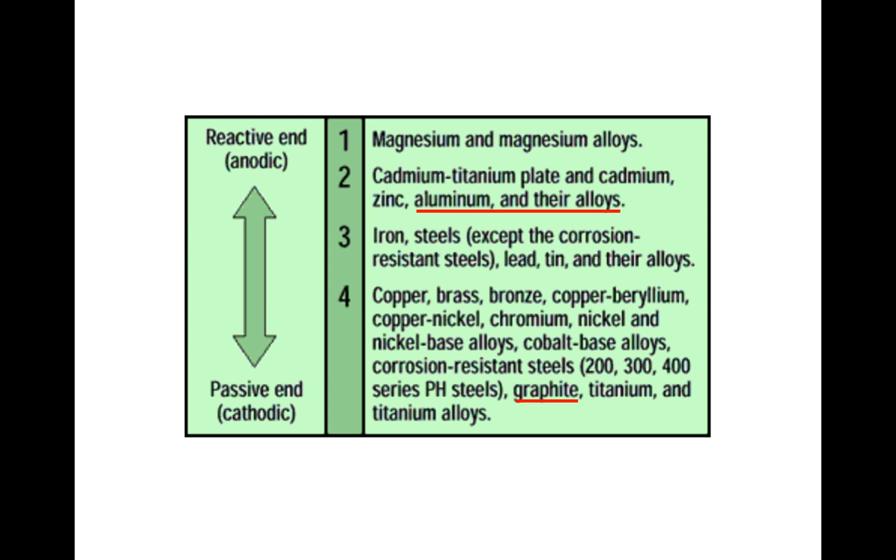So this is a bad situation here, where we have in group two, a reactive metal aluminum and aluminum alloys, but down in group four, where we have much less reactive metals, including graphite.